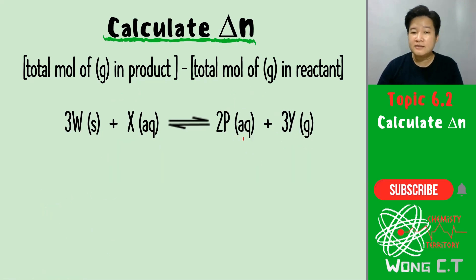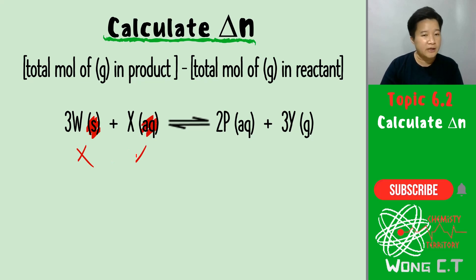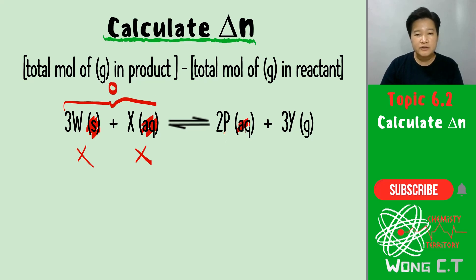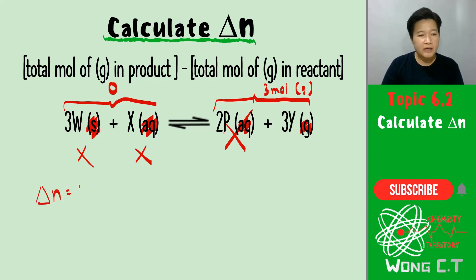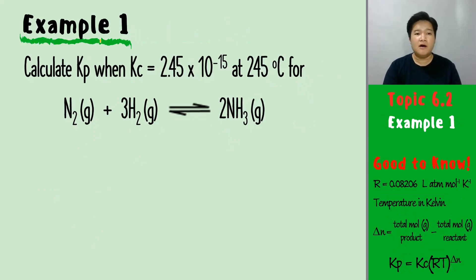Last example for delta N. The reactant has a solid and an aqueous species — neither is counted, so the reactant total is 0. On the product side, we have a gas of 3 moles. Therefore, delta N is 3 minus 0, and delta N equals 3.